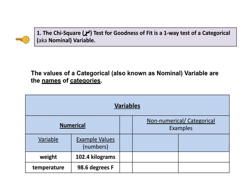Let's start with a concept that we're all familiar with: the numerical variable. The left side of this compare and contrast table gives two examples of this type of variable, weight and temperature. The numerical variable weight can have values that are numbers, for example 102.4 kilograms. And the numerical variable temperature will also have values that are numbers, for example 98.6 degrees Fahrenheit.